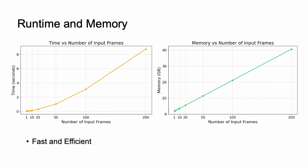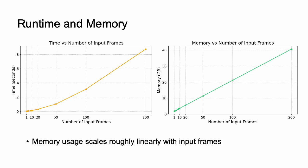Additionally, the model is fast and efficient. With 10 input frames, VGG-Transformer only needs around 0.2 seconds and 4 gigabytes of GPU memory. The memory grows almost linearly with the number of input frames.